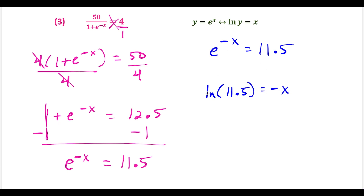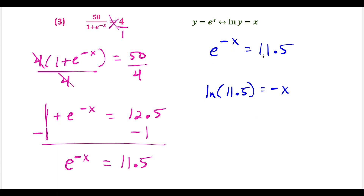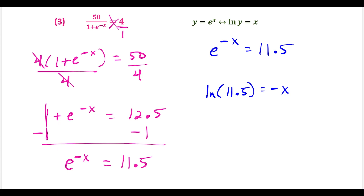Remember, the base of natural log is invisible but it's e. So e to the negative x equals 11.5 — you see how it brings you right back to the step. Another way to see this: if I have e to the negative x equals 11.5 and take the natural log of both sides, natural log and e cancel, giving us negative x equals natural log of 11.5. Either way works — whichever you're most comfortable with, that's the one you'll go with.